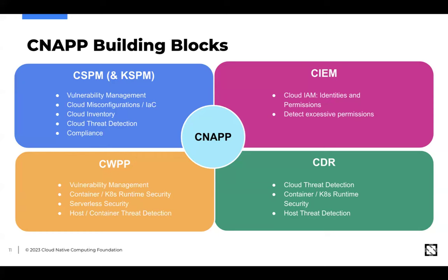For CIEM — Cloud Identity and Event Management — that's specifically about identities. An identity could be at the cloud layer — we're talking about IAM, identity and access management. Cloud providers provide services for defining identities and permissions for users in the cloud, what they can and can't access. Even at the workload level, there are tools like role-based access control (RBAC) — it's been in Linux long before cloud native — defining what CRUD actions (create, read, update, delete) you can perform.